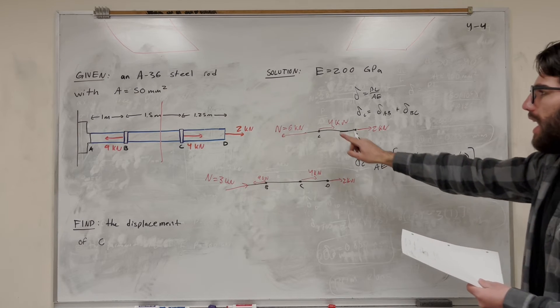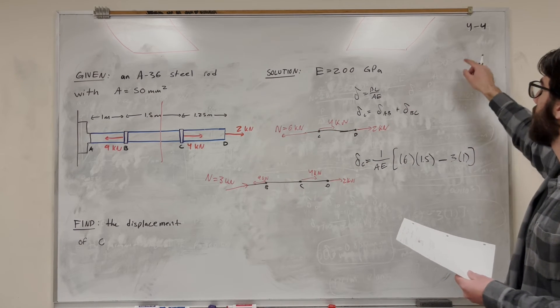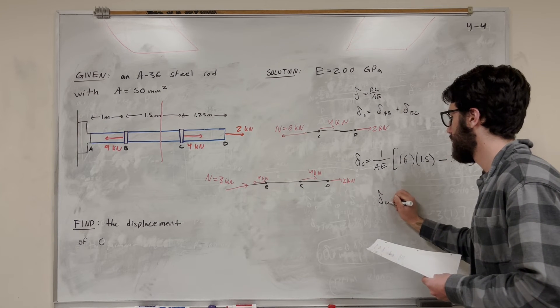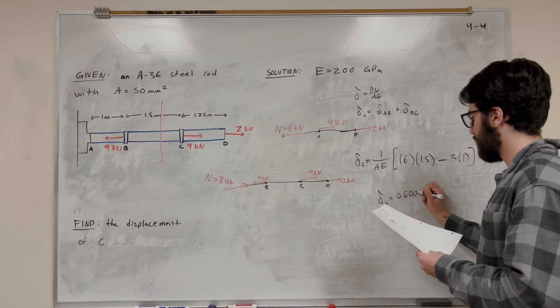So with this equation, we just need to plug in A, which is 50 millimeters squared, and E, which is 200 gigapascals. And you're going to find that displacement of C is equal to 0.6 millimeters.